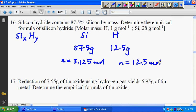So the ratio should be 3 to 12. 3 to 12 is like 1 to 4. The ratio, or the empirical formula, is SiH4.